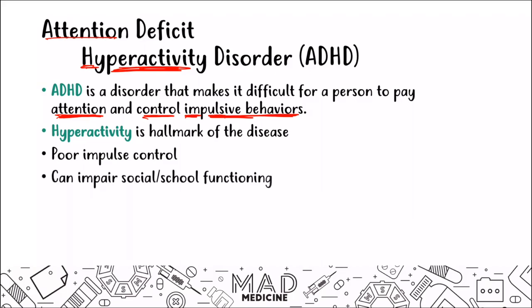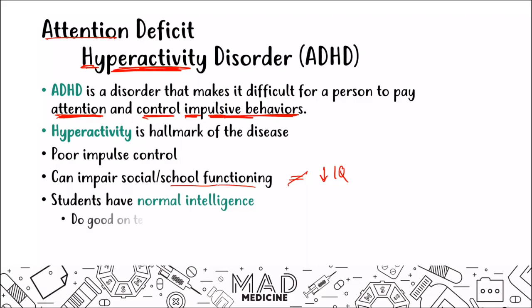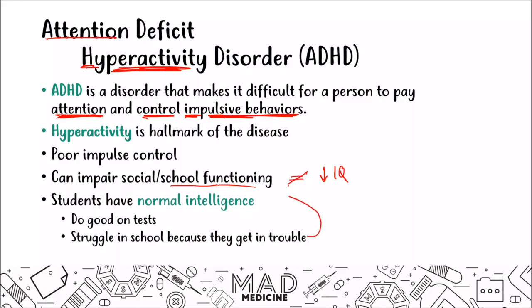Patients can also have impaired social and school functioning. A lot of times when people hear impaired school functioning, they think that someone with ADHD may have a low IQ, but the truth is that's actually not the case. People with ADHD actually have normal intelligence — they actually do well on tests. But the problem is they struggle to pay attention in class, and because they struggle to pay attention, they get in trouble, and that can impair their school functioning.